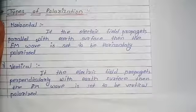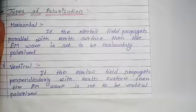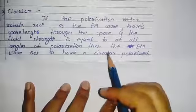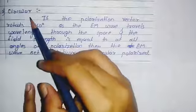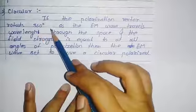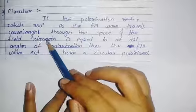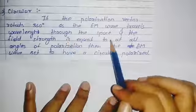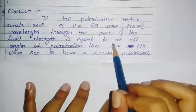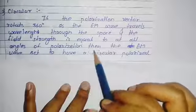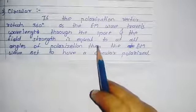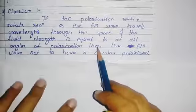The third type is circular polarization. If the polarization vector rotates 360 degrees as the EM wave travels one wavelength through space, and the field strength is equal at all angles of polarization, then the EM wave is said to be circularly polarized.